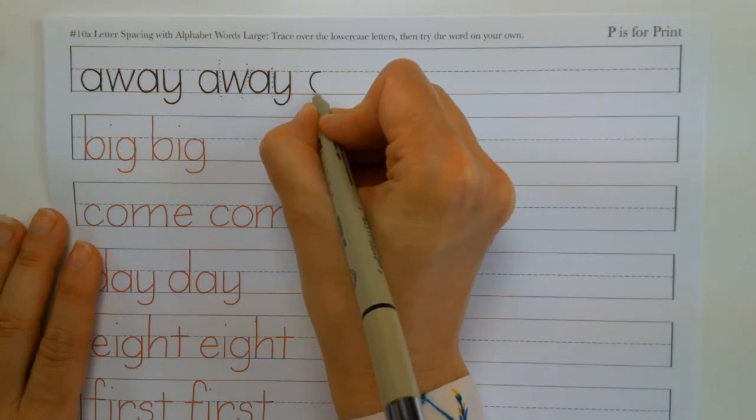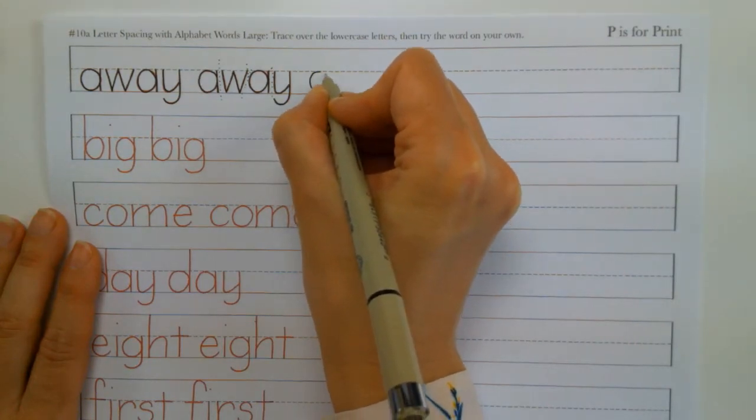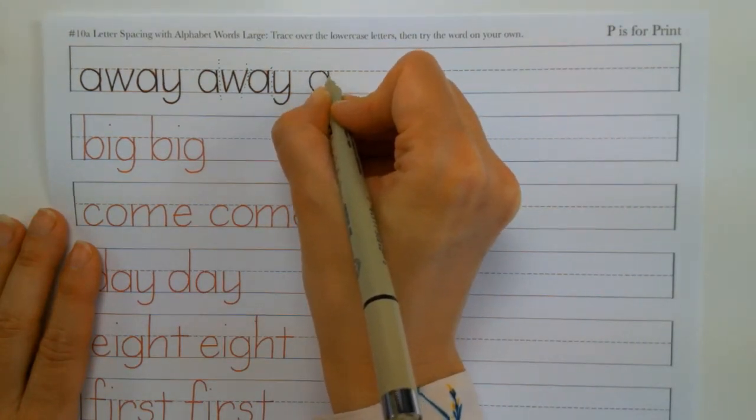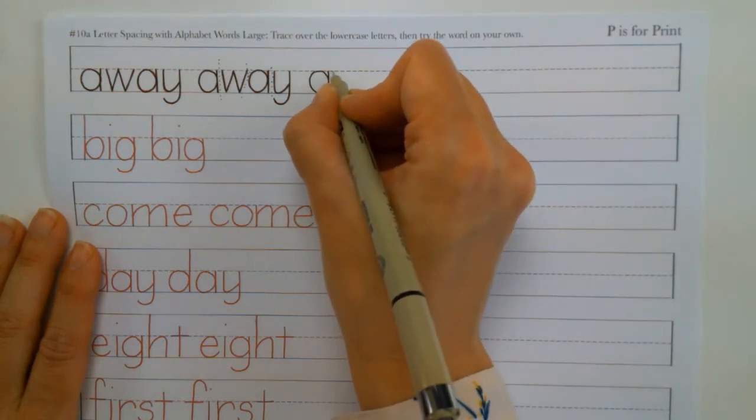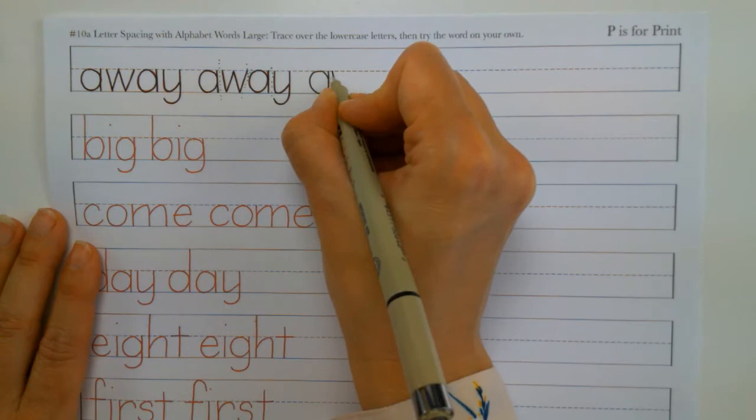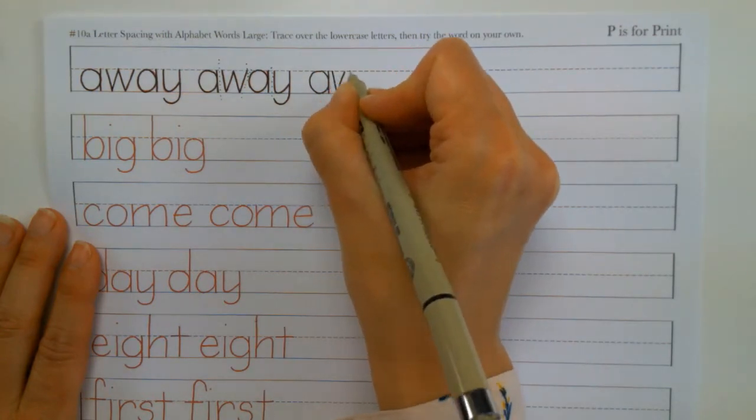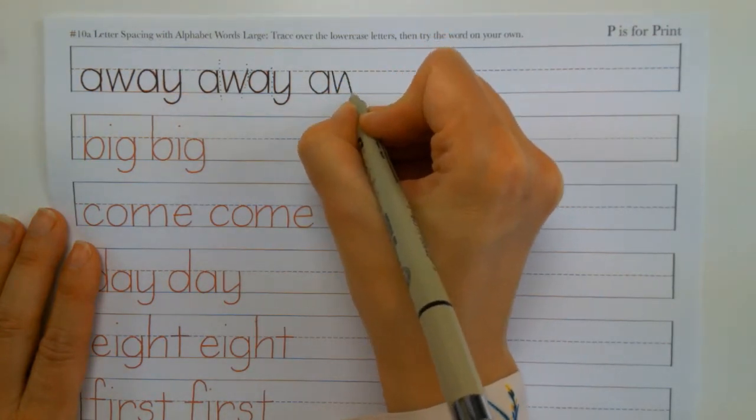Okay, so let's try one on our own. And basically, if you're worried about word space, you do about the space of a letter in between to have a nice space. So we start with our circle. And then we have our vertical line.